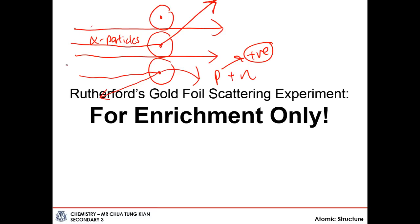Based on this, Rutherford was able to conclude: number one, the bulk of the atom is empty space; number two, the nucleus contains most of the mass because everything else passes right through; and that the nucleus was positively charged, because the positively charged alpha particles were deflected away from the nucleus when they passed near it.